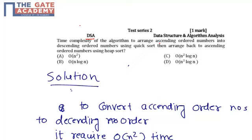What is the time complexity of the algorithm to arrange the ascending order numbers into descending order numbers using quicksort, then again arrange back to ascending order numbers using heapsort?